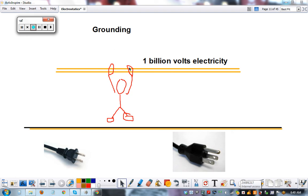That's why we wrap wires in rubber because rubber is a good insulator. Now this is a live wire with one billion volts of electricity running through it and if this person is just hanging on to the wire...